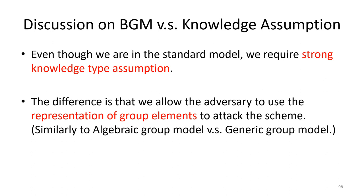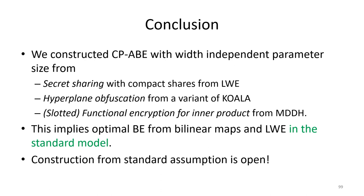Even though we prove security in the standard model, we still require a strong knowledge-type assumption. The advantage of our proof over the proof in the bilinear generic group model is that we allow the adversary to use representations of group elements to attack the scheme — similar to the difference between the algebraic group model and the generic group model. In conclusion, we constructed CP-ABE with width-independent parameter size from: secret sharing with compact shares from LWE, hyperplane obfuscation from a variant of the KOALA assumption, and slotted functional encryption for inner product from the MDDH assumption. This implies optimal broadcast encryption from bilinear maps and LWE in the standard model. Construction from more standard assumptions remains open. Thank you for your attention.